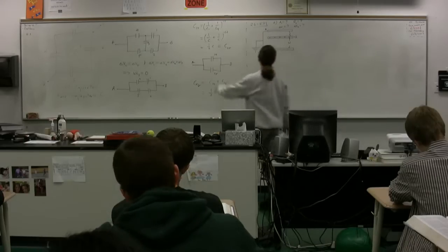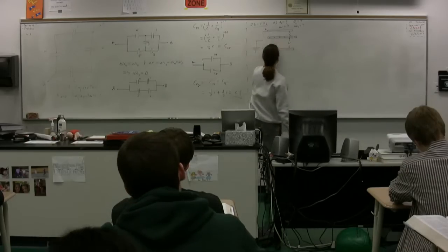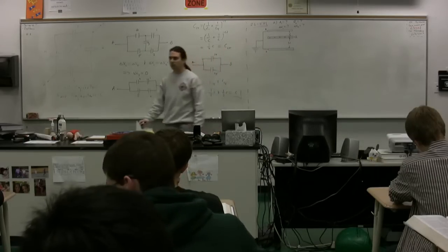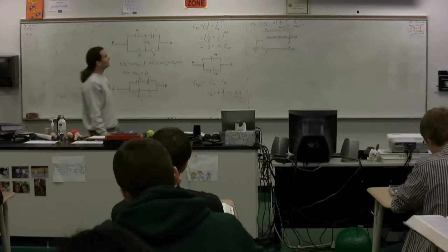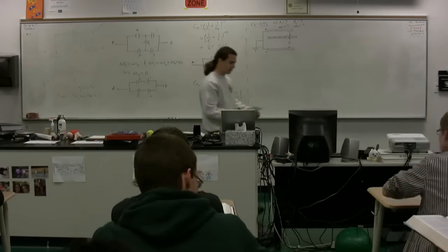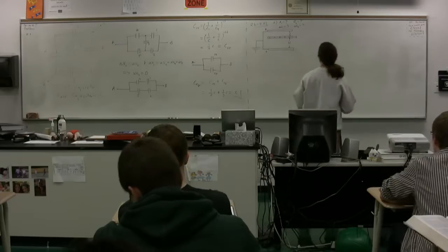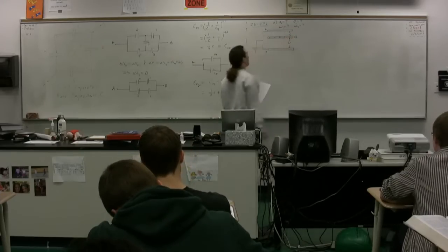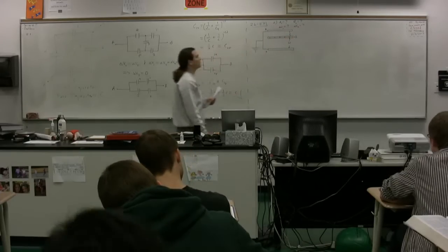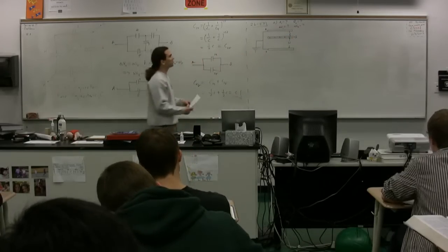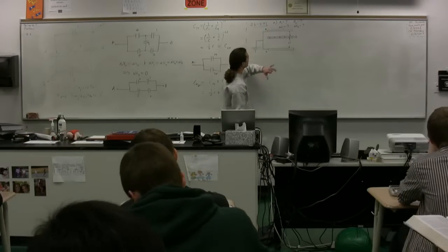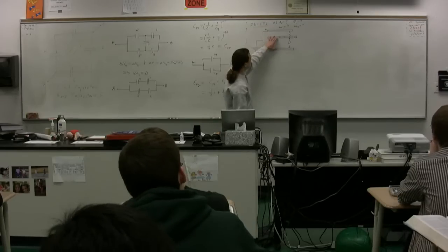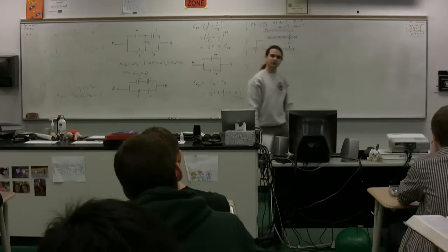The question is: after we add a plate at a particular distance from each of the two plates, what is the charge on each one of the plates, and what is the electric potential difference between each one of the plates and the center plate? When I talk about electric potential difference one, that's between plate one and the middle plate, and electric potential difference two is between plate two and the middle plate.